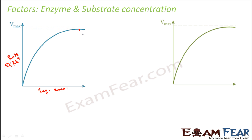Why does that happen? If enzyme concentration is increasing too much, what happens in the mechanism of enzyme activity is that the enzyme has to combine with the substrate to form an enzyme-substrate complex. If you have too many enzymes, a point will come where the substrate gets used up — there is no more substrate but too much enzyme. That enzyme has nothing to combine with, so it is of no use. The rate of reaction will not increase.